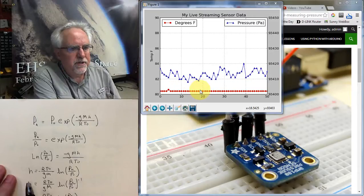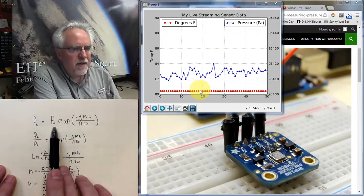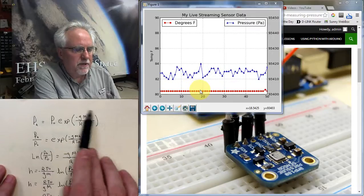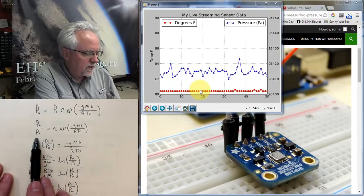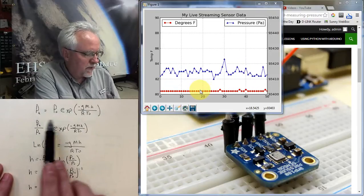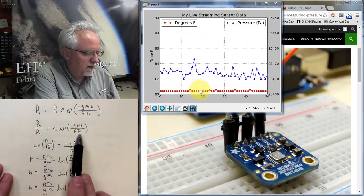Well, what's the first thing that we can do? We can divide both sides of the equation by p0, and then at least we just end up with the exponential by itself. And so then we end up with pH over p0, because we're dividing both sides by p0, is equal to exponential minus gmh over RT0.